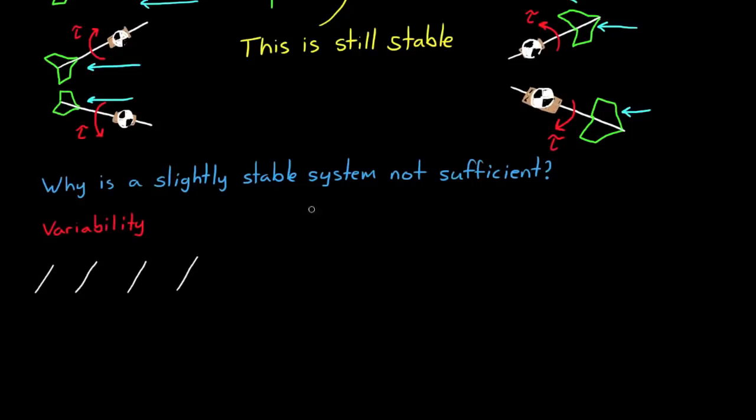Now these small changes might come about for a variety of reasons, and I'll use this dart example to illustrate two of them. When manufacturing darts, you might not be able to reproduce each one with the exact same center of gravity or center of pressure. Therefore there's going to be some uncertainty in where those parameters exist on any given dart.